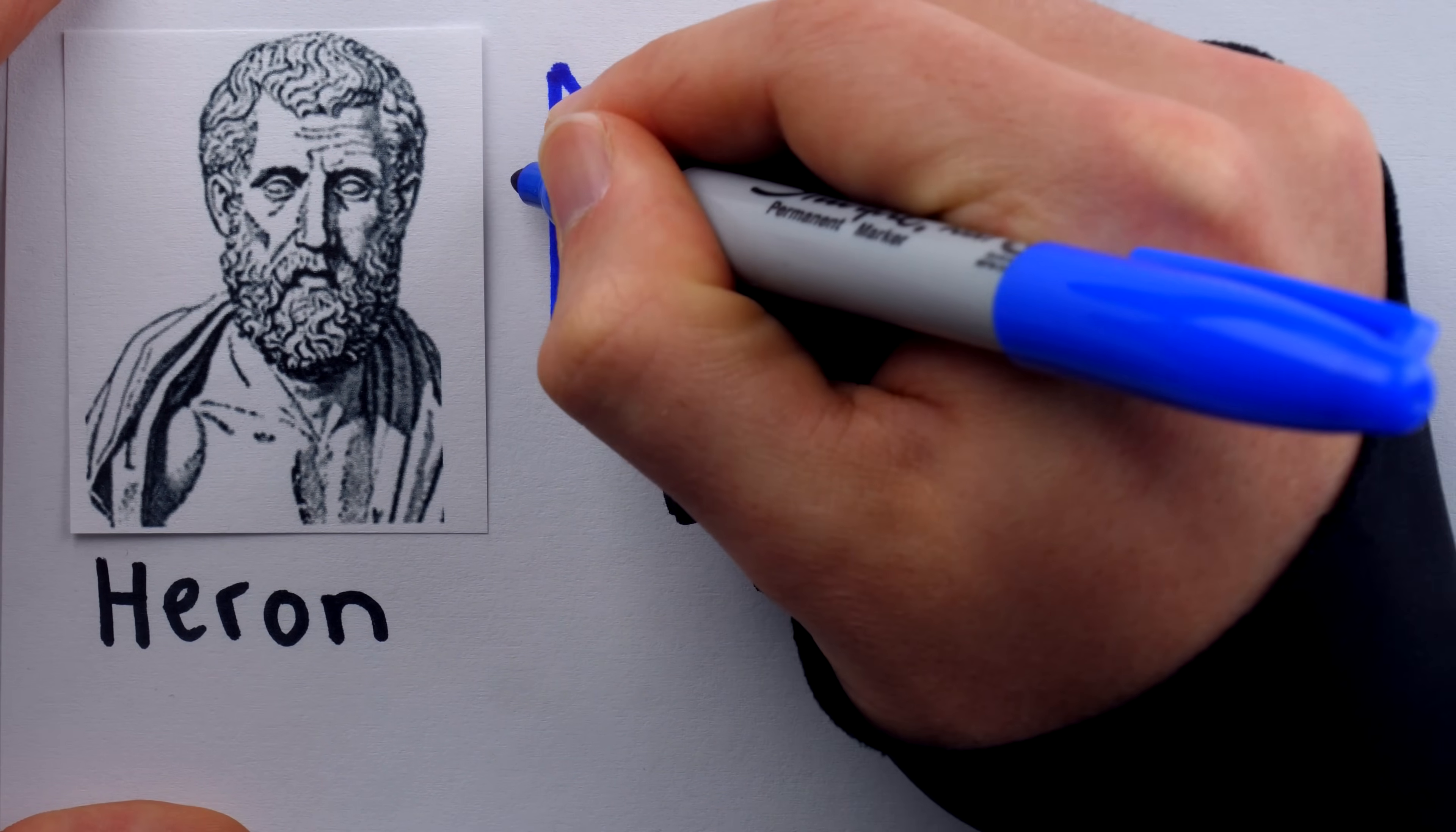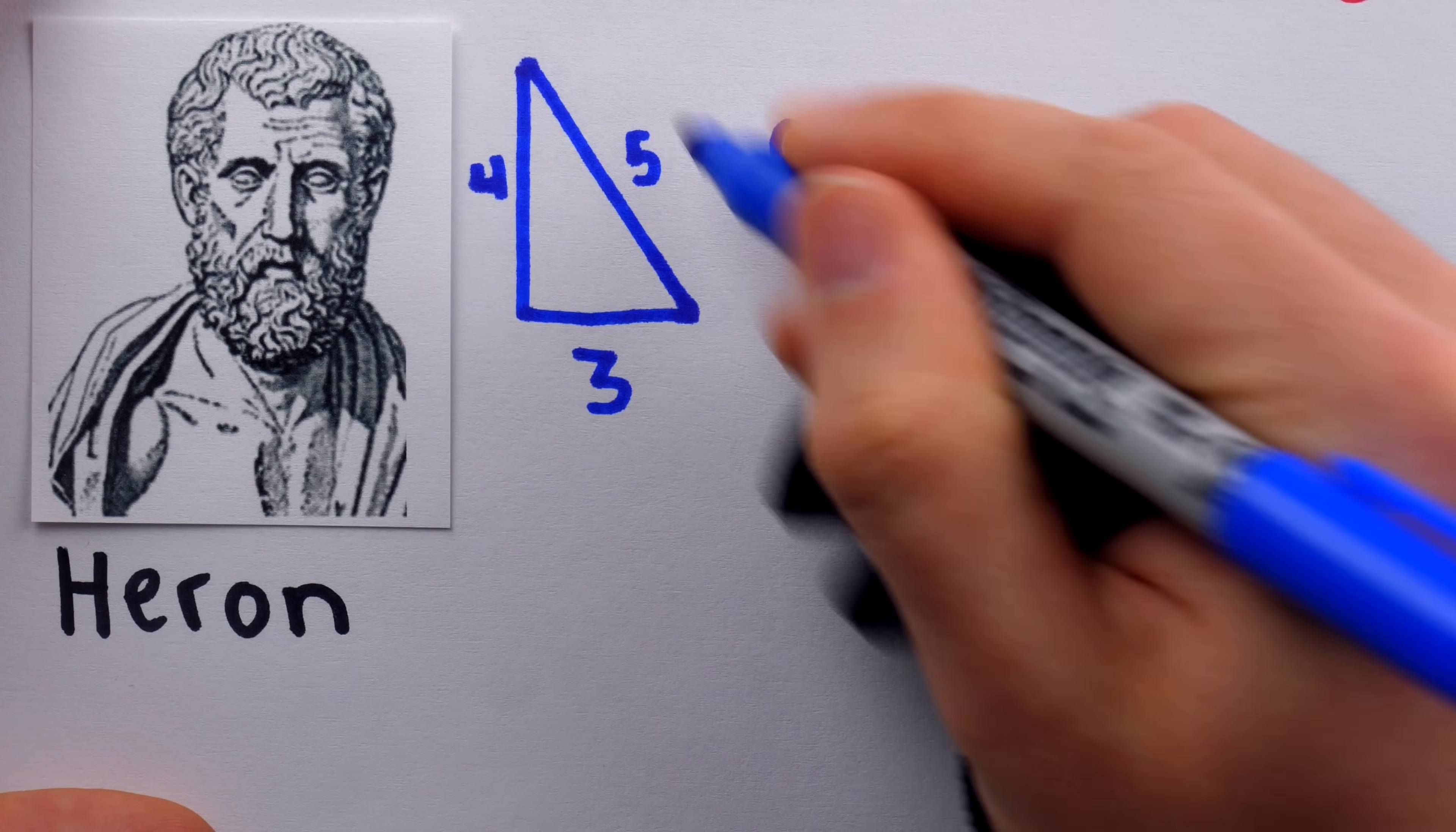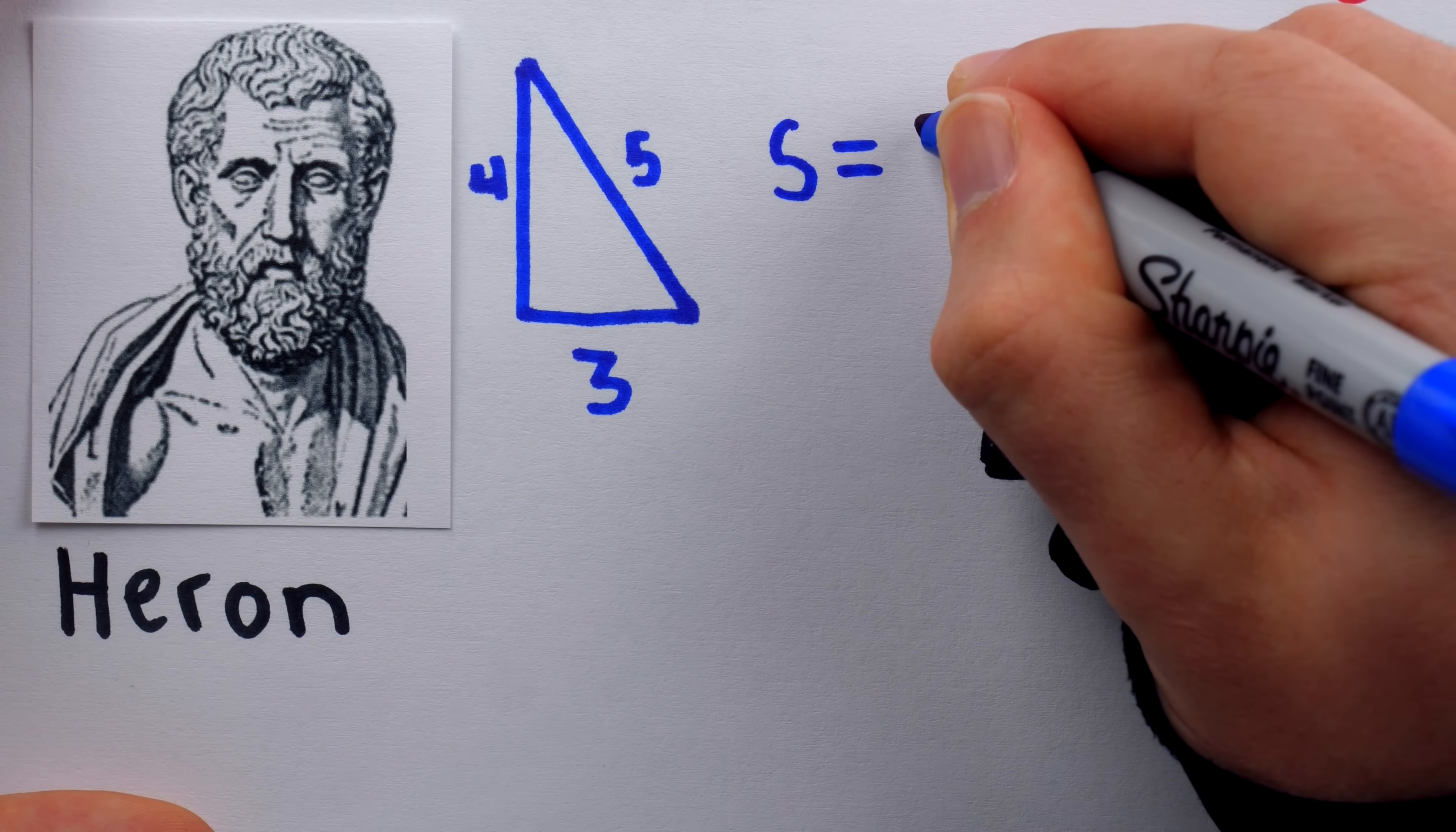Let's say this triangle has side lengths 3, 4, and 5. You may recall that Heron's formula requires we calculate the semi-perimeter. That means add the lengths of the sides and divide by 2, half of the perimeter. If we add the lengths of these sides, we get 12, and if we cut that in half, we get 6.